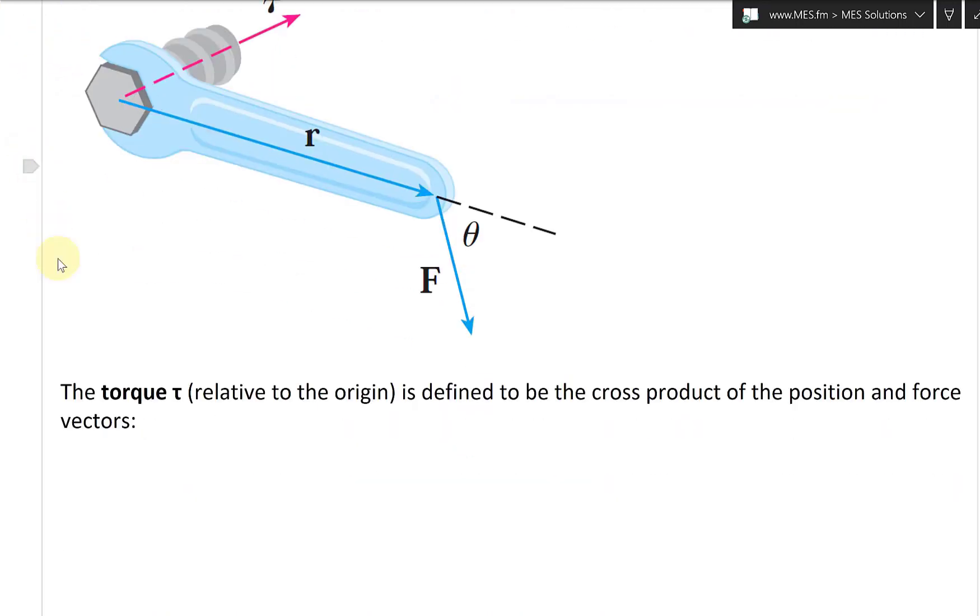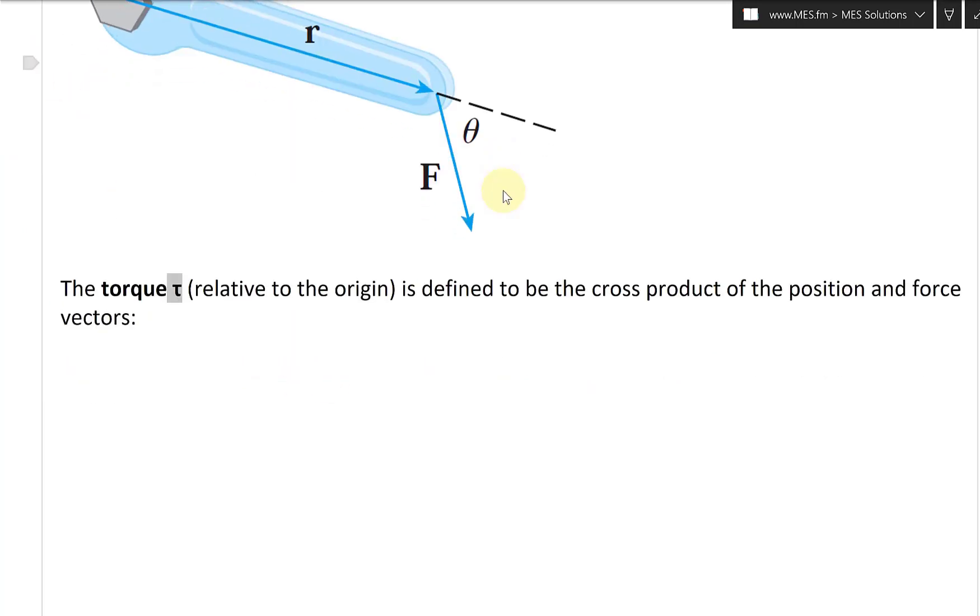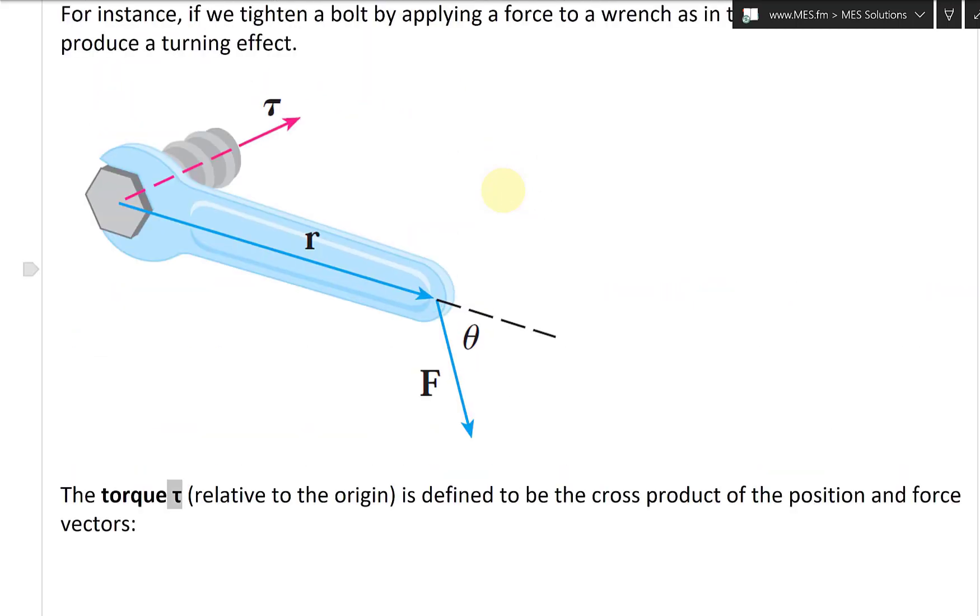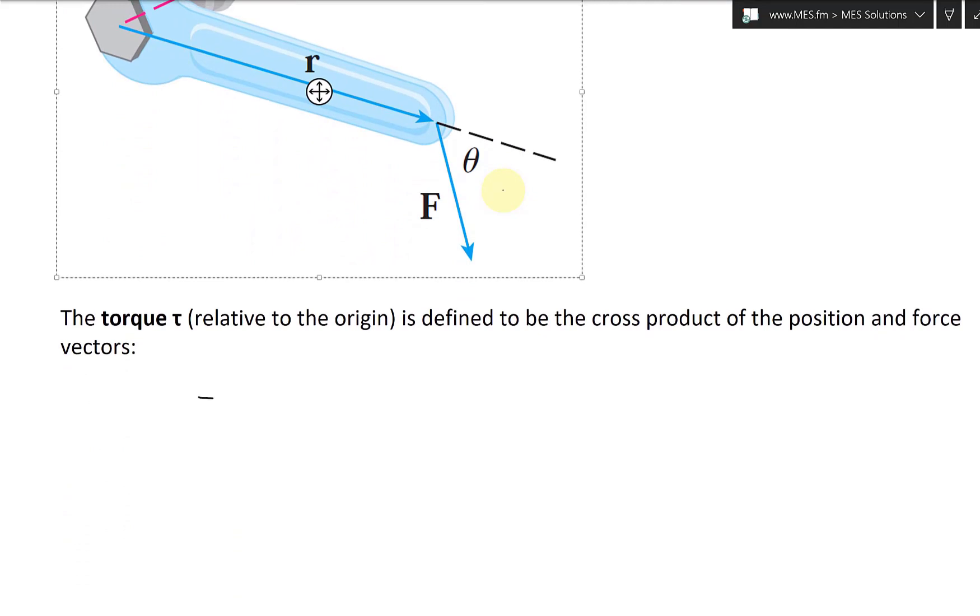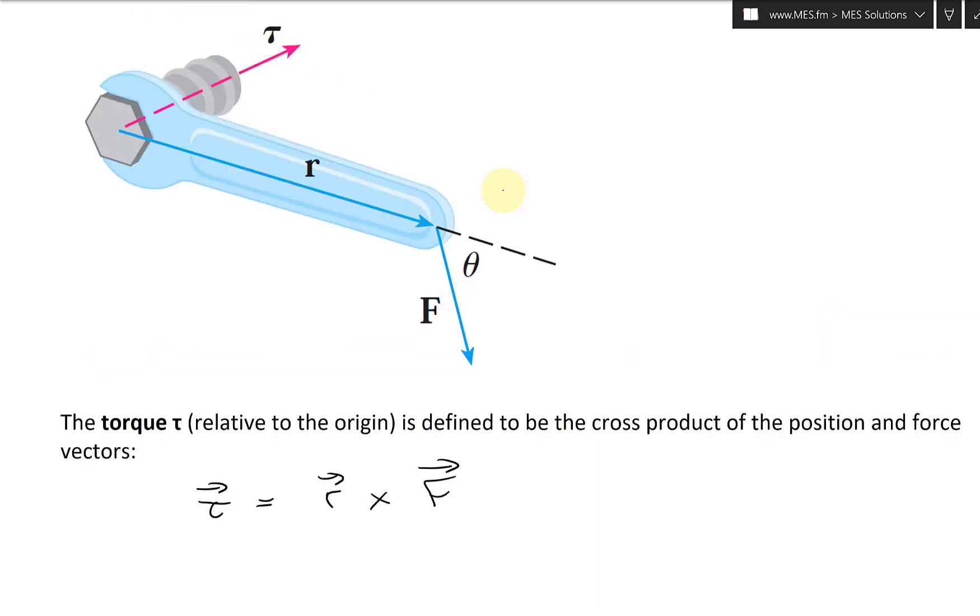The torque tau, that's the Greek letter tau, relative to the origin is defined by the cross product of the position and force vectors. So the torque is equal to, using the right hand rule, the r position vector cross the force vector.